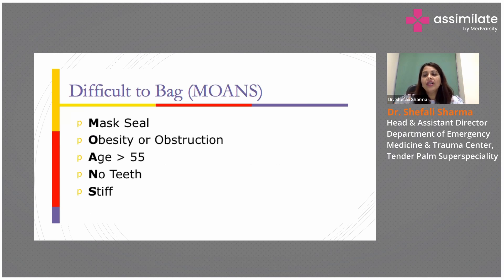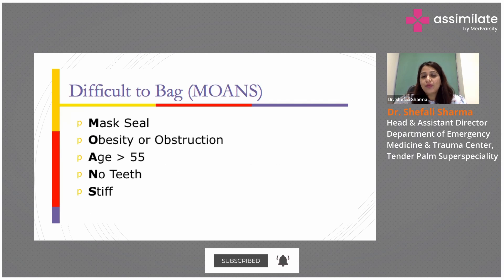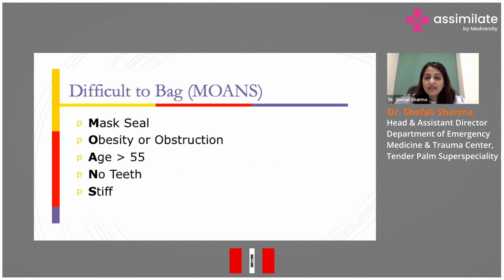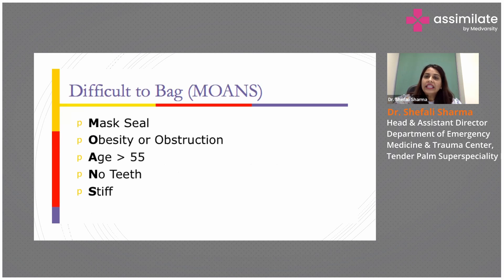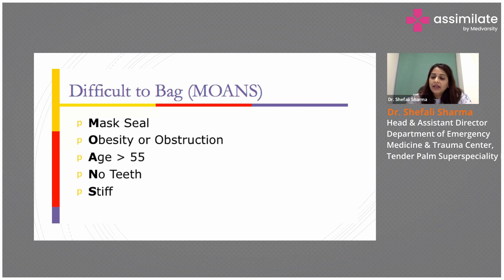These conditions are all related to where you will find difficulty in bag-mask ventilation: the mask seal is not proper, there is obesity or obstruction, there are a lot of secretions inside the mouth, the age is more than 55 — because with increasing age people tend to become more obese and have limited movement — there are no teeth, and the neck is stiff. These conditions will cause difficulty in bagging.